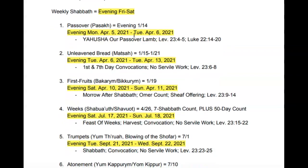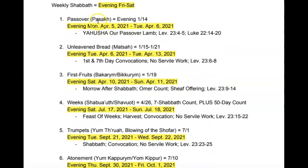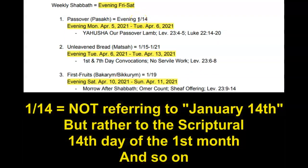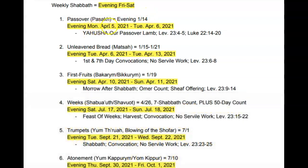Here are the appointed times listed. Pesach or Passover is on the evening of the 14th day of the first scriptural month — not January 14th, but the scriptural first month. It is from Monday April 5th to Tuesday April 6th, 2021. Yahusha is our Passover lamb. You can learn more about that in Leviticus chapter 23, verses 4 through 5, and Luke chapter 22, verses 14 through 20.